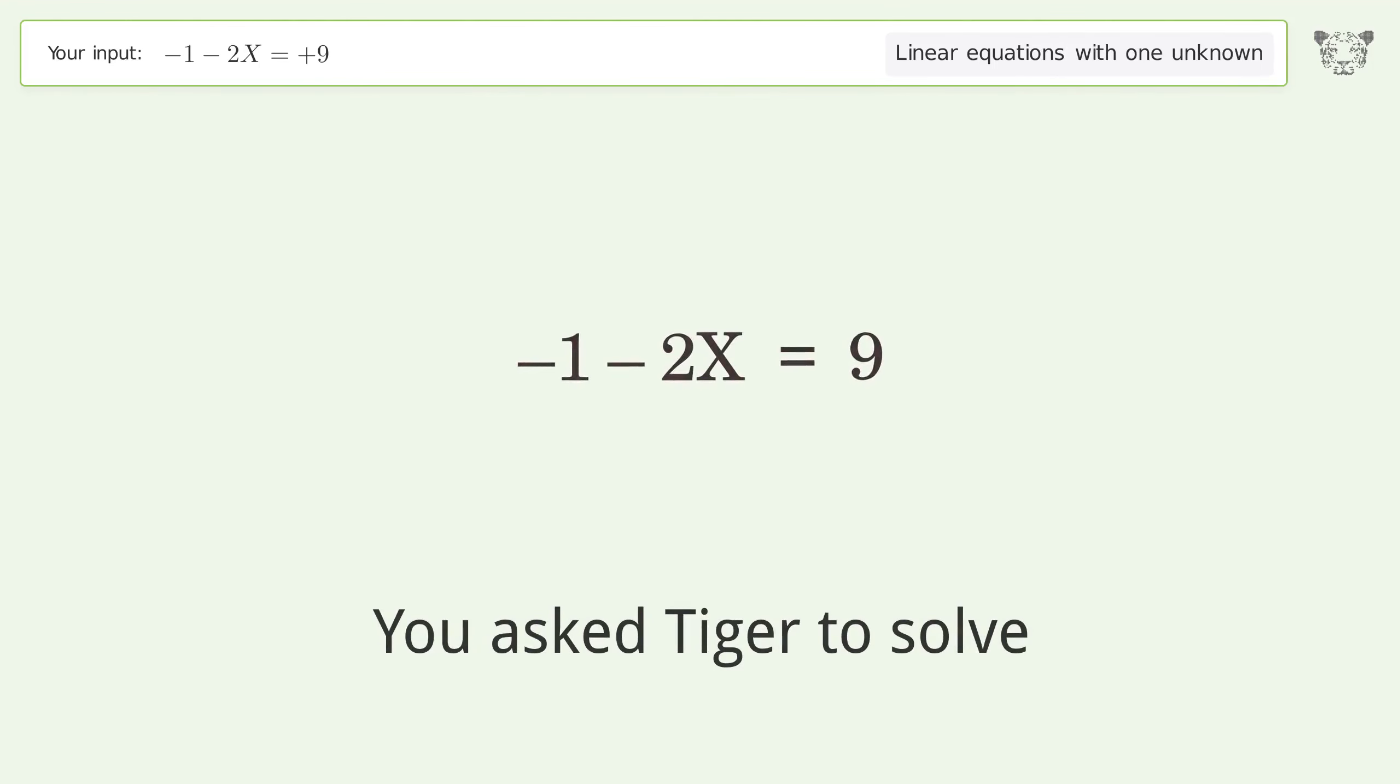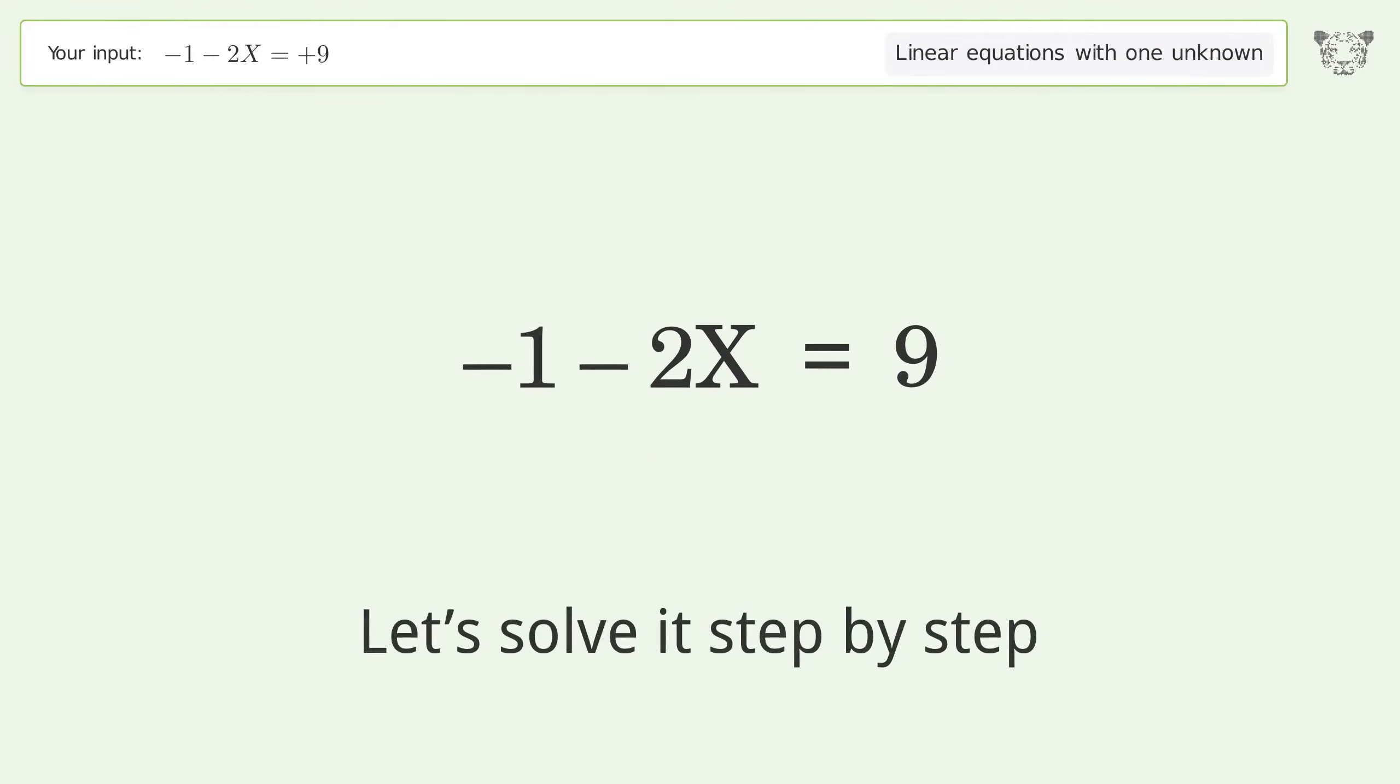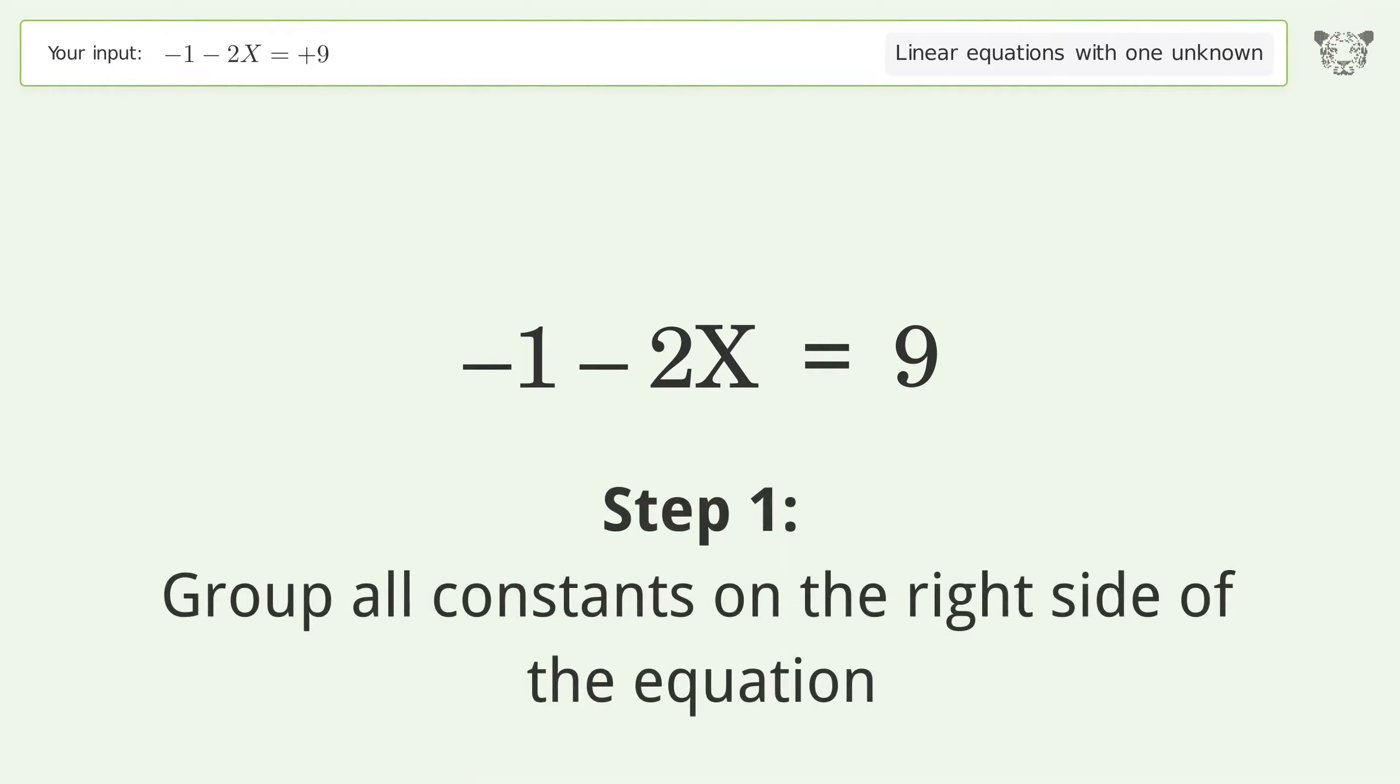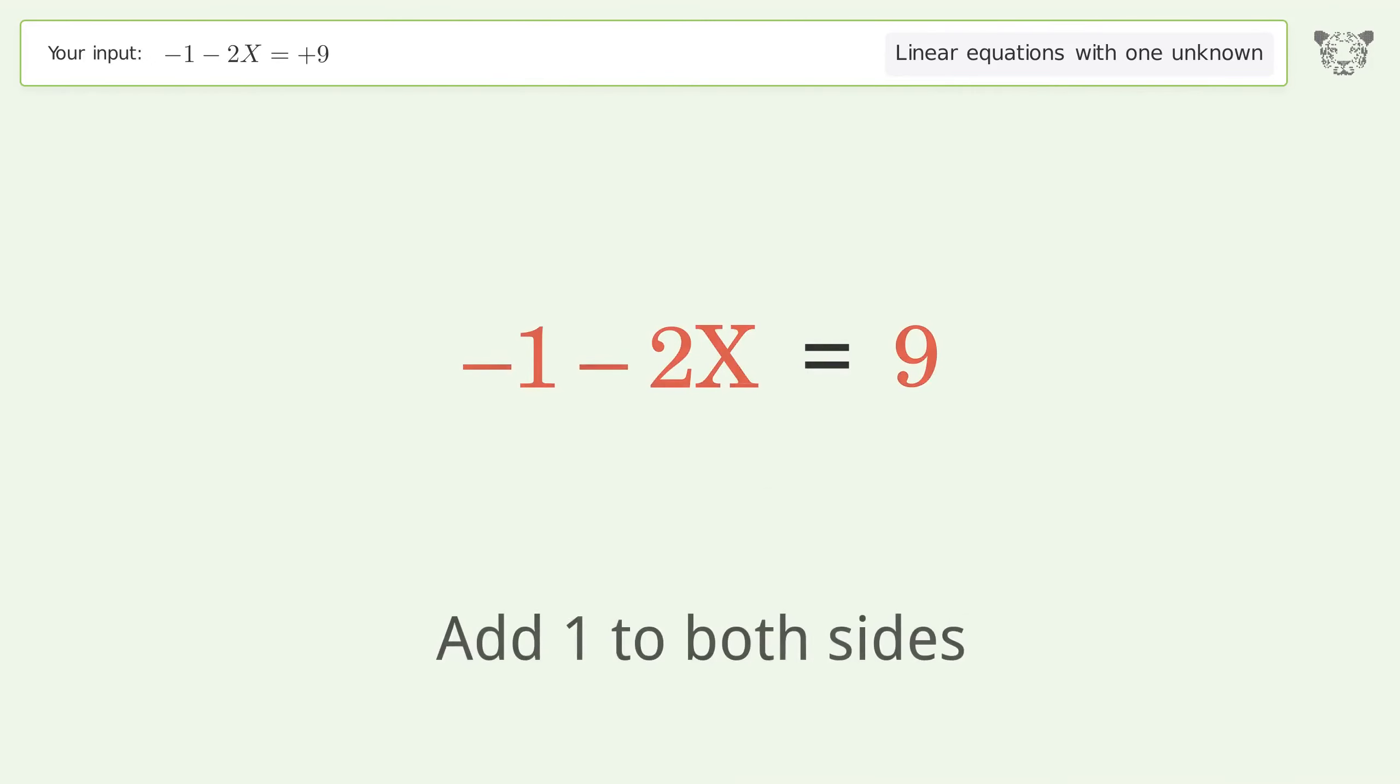You ask Tiger to solve this. This deals with linear equations with one unknown. The final result is X equals negative 5. Let's solve it step by step. Group all constants on the right side of the equation. Add 1 to both sides.